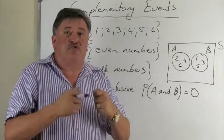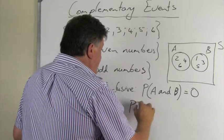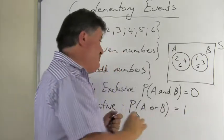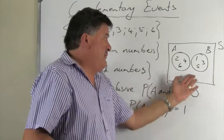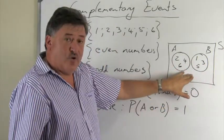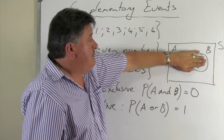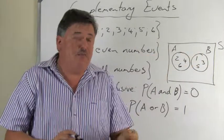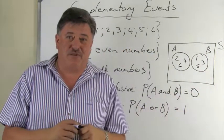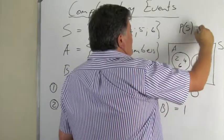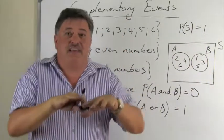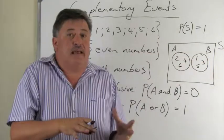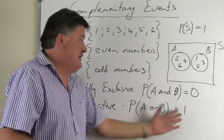Secondly, for events to be complementary they must also be exhaustive. What was special about exhaustive events? The probability of A or B is equal to one. We said that for exhaustive events there is nothing outside, so the union is the same as the sample space, and the probability of the sample space is always equal to one.